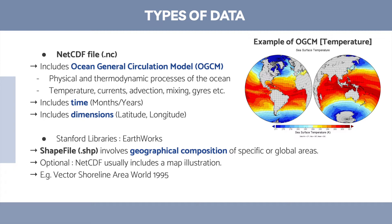The .nc file also includes the specific time and location of interest. For example, if you'd like to know about the circulation of the Gulf of Thailand over 12 months of 2021, that would be your NetCDF file. Another optional file is the shapefile, or .shp file, which involves only geographical composition — basically the map you can use to edit your result file.